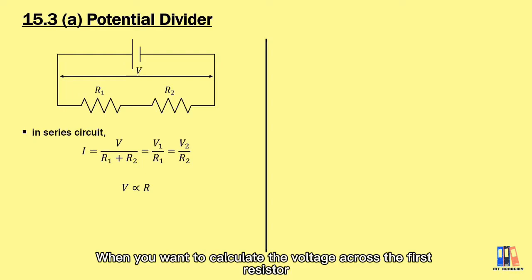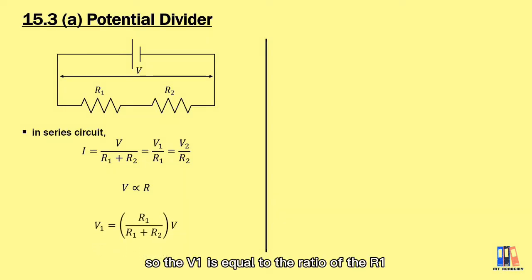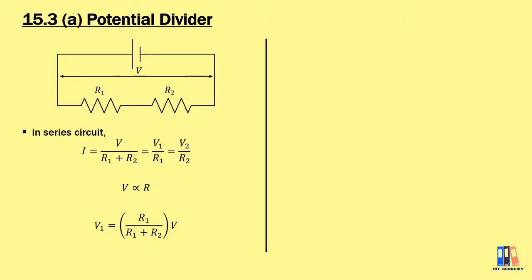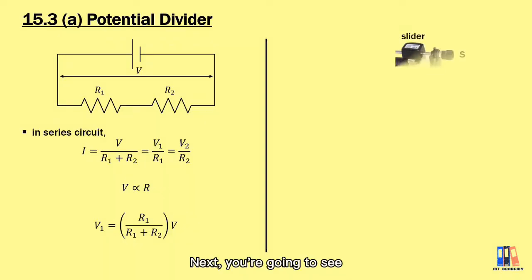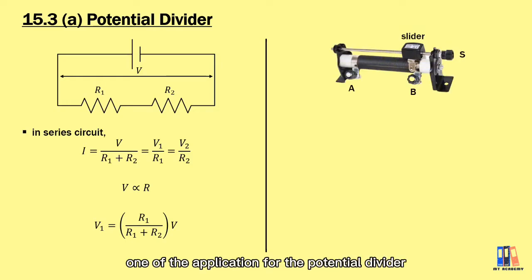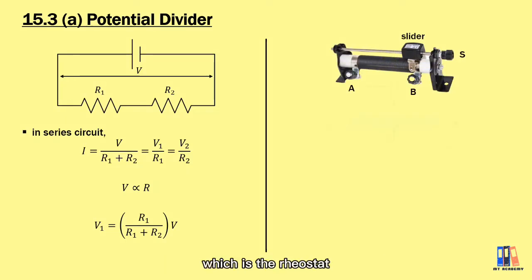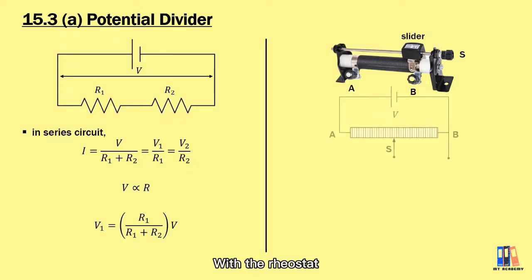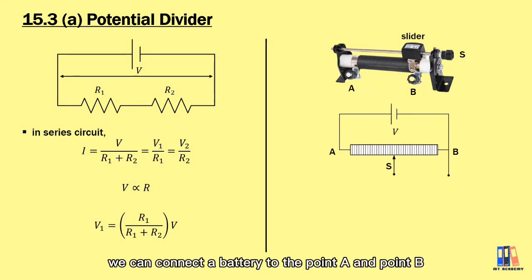The potential divider equations give the ratio when you want to calculate the voltage across the first resistor R1. So V1 is equal to the ratio of R1 to the total resistance, multiplied by the voltage. Next, we're going to see one of the applications for the potential divider, which is the rheostat that you may have used before in your lab.